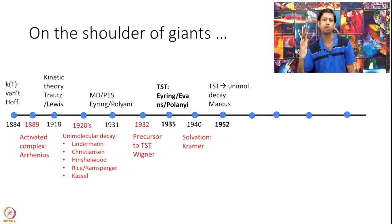1952, Marcus did another beautiful work. He essentially solved the unimolecular decay. The people, the work that was done in 1920s, Marcus entered, said I can now solve it completely. And what he did is to use transition state theory. That is the reason in 1920s they were not able to solve it. Because transition state theory did not exist back then.